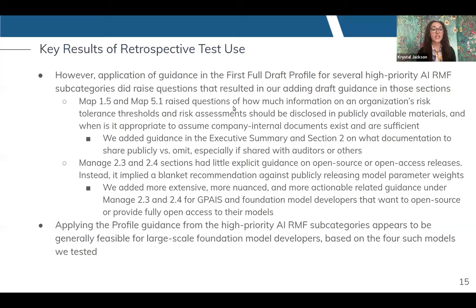Some other key results from this analysis: we decided to add additional guidance on the organizational decision to disclose risk tolerance thresholds and risk assessments, and we did this in the executive summary and section two. In many cases, model information should be kept private, so we addressed the appropriateness of sharing information at different levels — whether private, with auditors or evaluators, or for the public. We also added a more nuanced approach to the question of managing risk for open access or open source models to give developers who choose that path more actionable guidance. Overall, this testing really demonstrates that our profile guidance was largely applicable and feasible for model developers to apply for their future risk assessments.